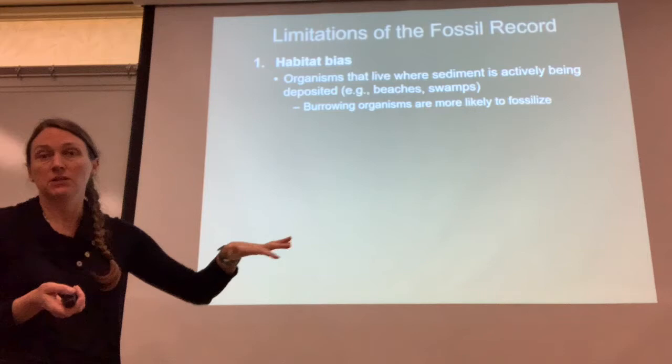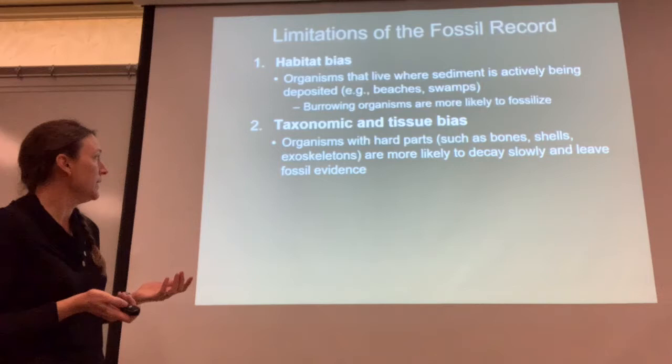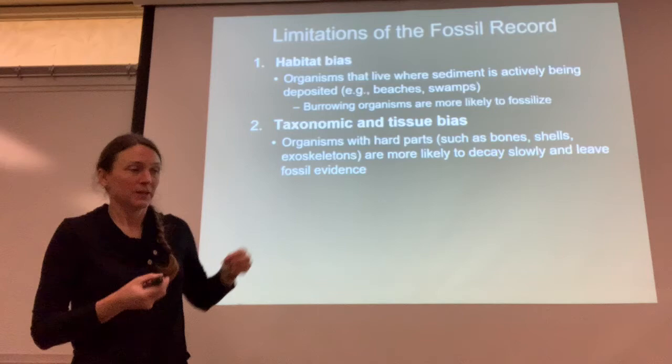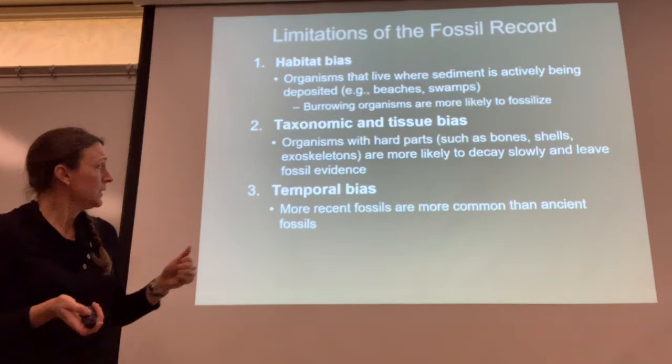So we're pretty lucky with freshwater — a lot of organisms live in deltas with sedimentary deposits, estuaries, things like that. There's also taxonomic and tissue bias: organisms with hard parts, like exoskeletons for insects, are more likely to decay slowly and become fossils. But we're not going to find fossils of really soft organisms, like fly larvae and things like that.